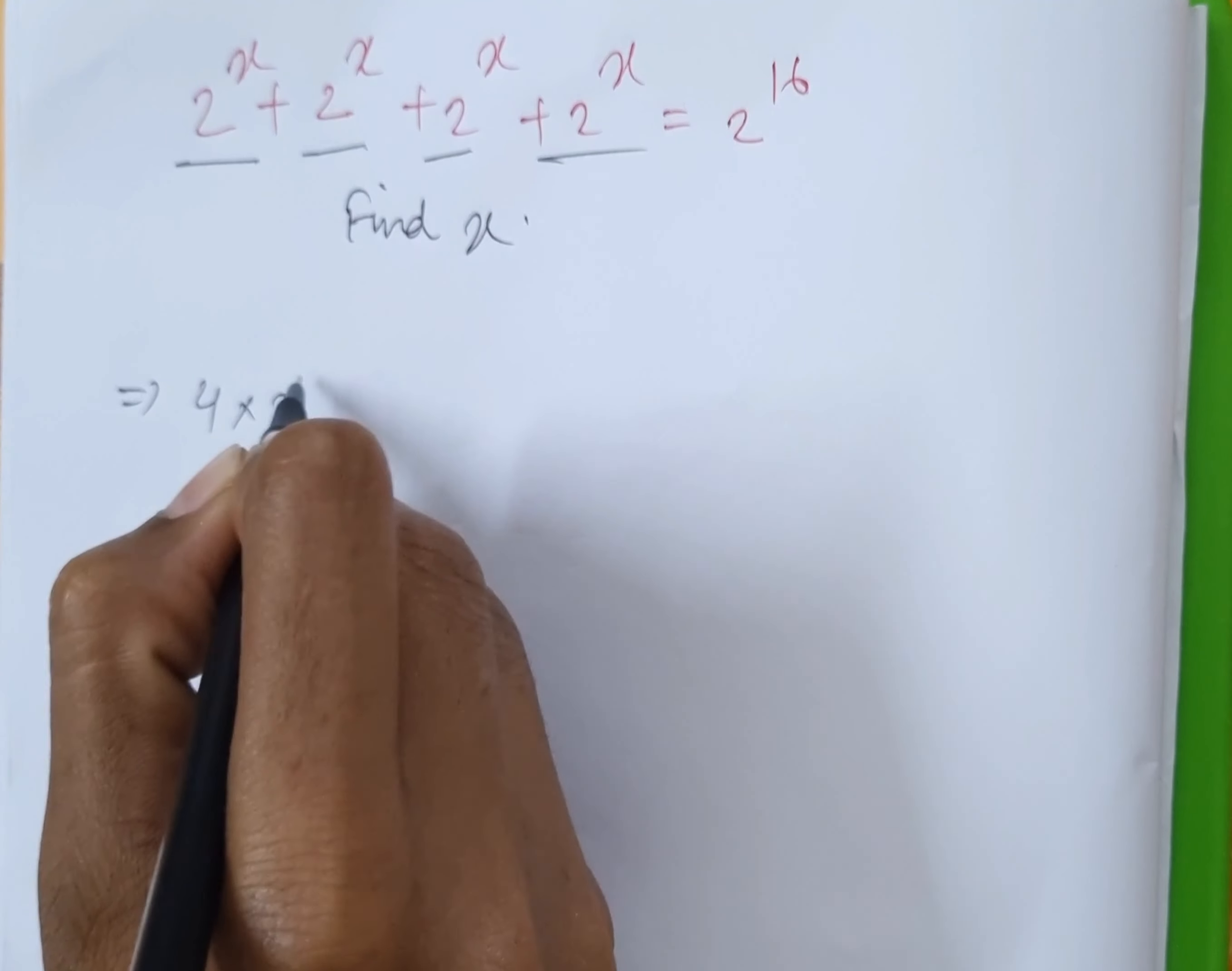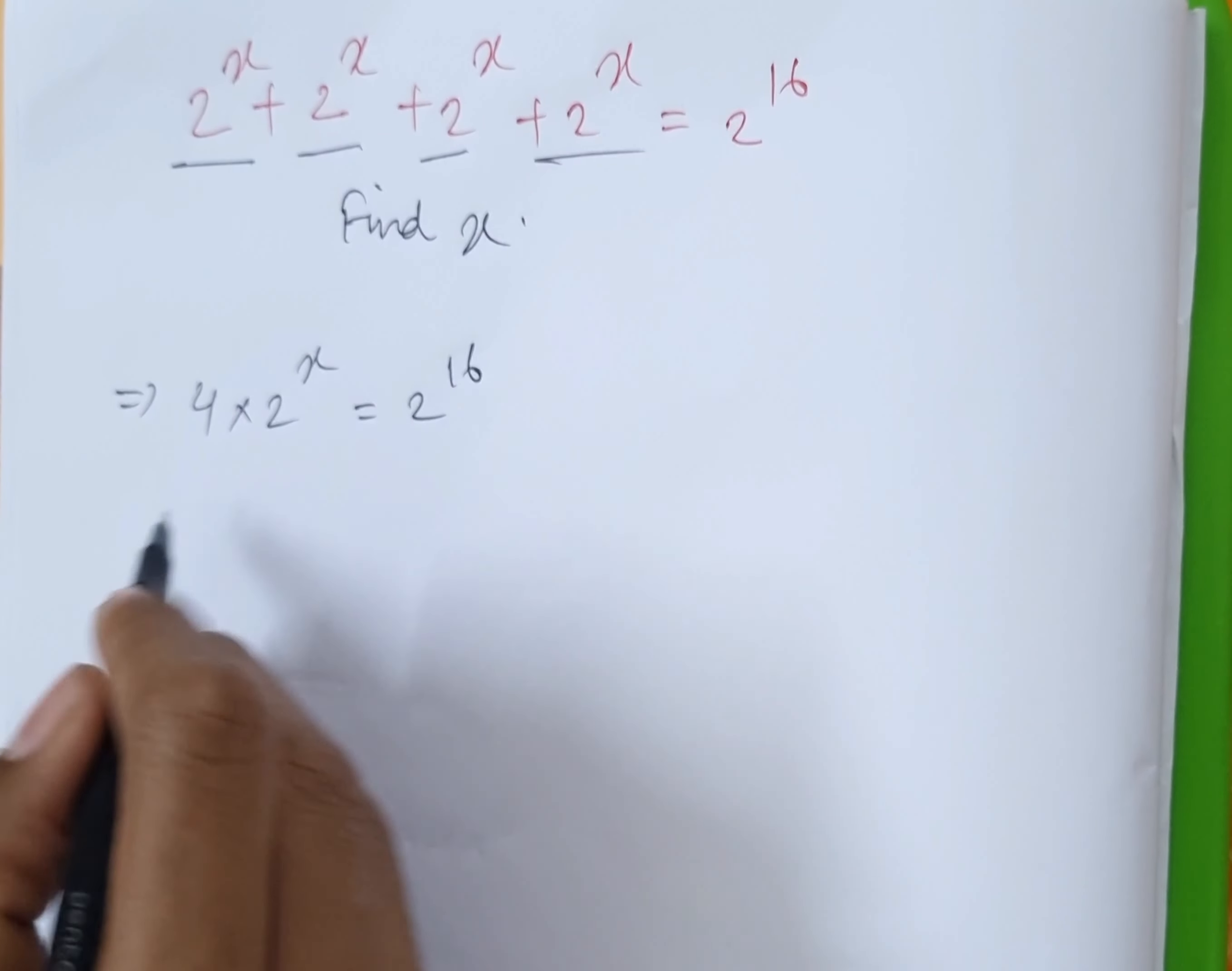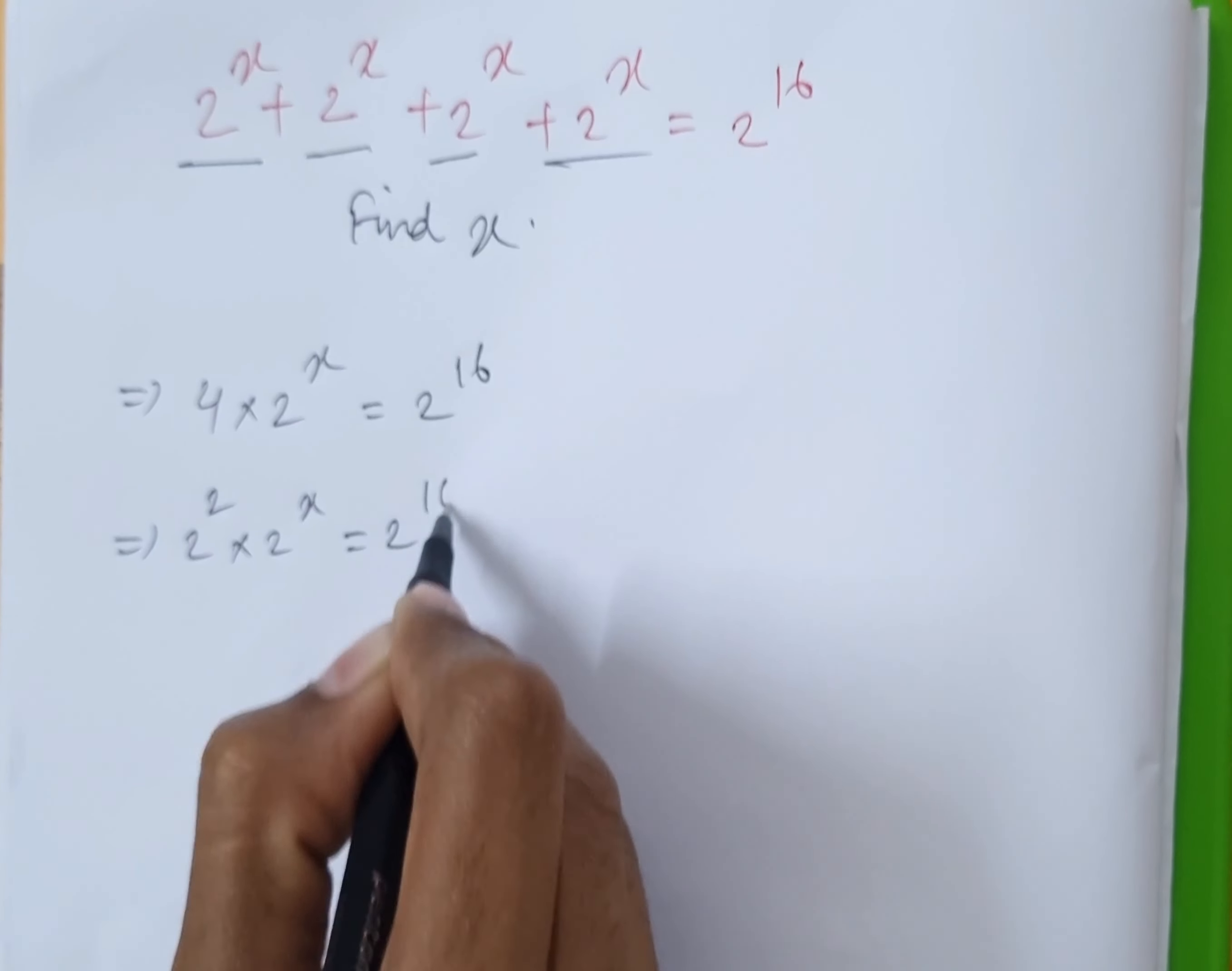As there are 4 times 2 to the power x, we can also write 4 equals 2 square. So we have 2 square into 2 to the power x equals 2 to the power 16.